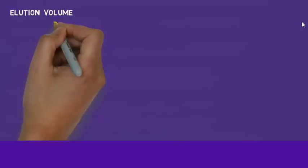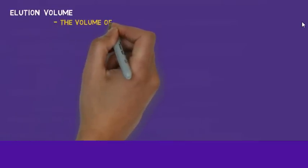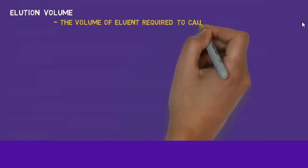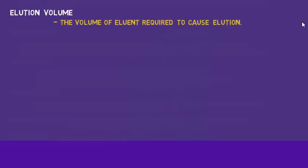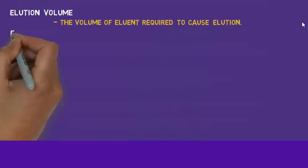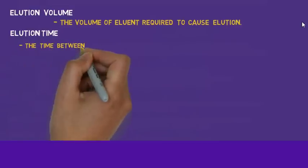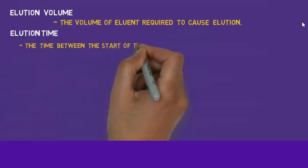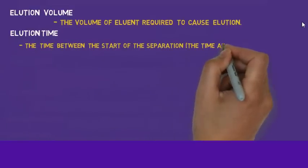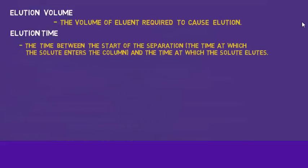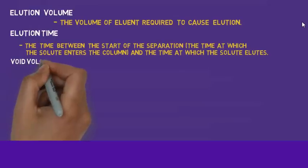Elution volume is the volume of eluent that is required to cause elution — the initial volume is called elution volume. Elution time is the time between the start of the separation at which the solute enters the column and the time at which the solute elutes; that is called elution time.